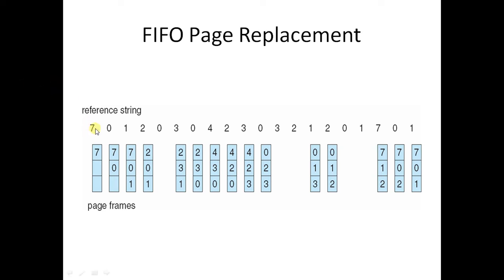First, as you can see, 7 is the first element. Our frames are empty, so we load 7, then move to 0 and load 0, then move to 1 and load 1. Now 7, 0, and 1 are all loaded into the frames. Now we have to use the concept of FIFO.